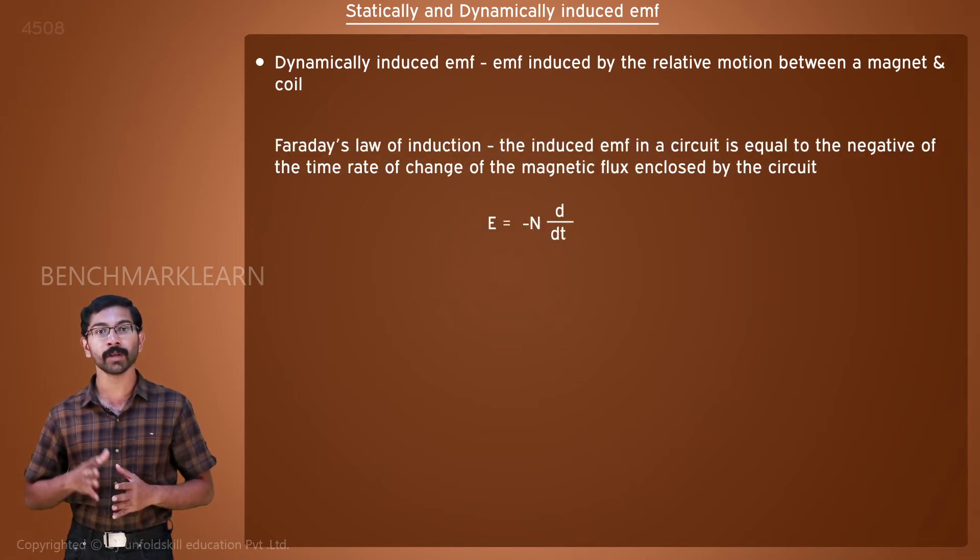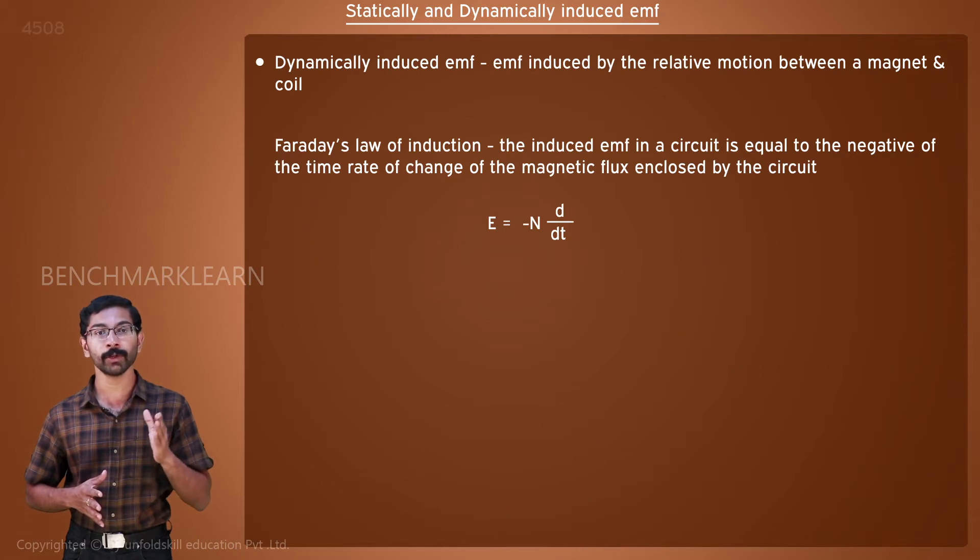Faraday's law of induction states that the induced EMF in a circuit is equal to the negative of the time rate of change of magnetic flux enclosed by the circuit. There is no mention of a relative motion in this law. If there is a change in magnetic flux over time, then an EMF can be induced across a conductor.